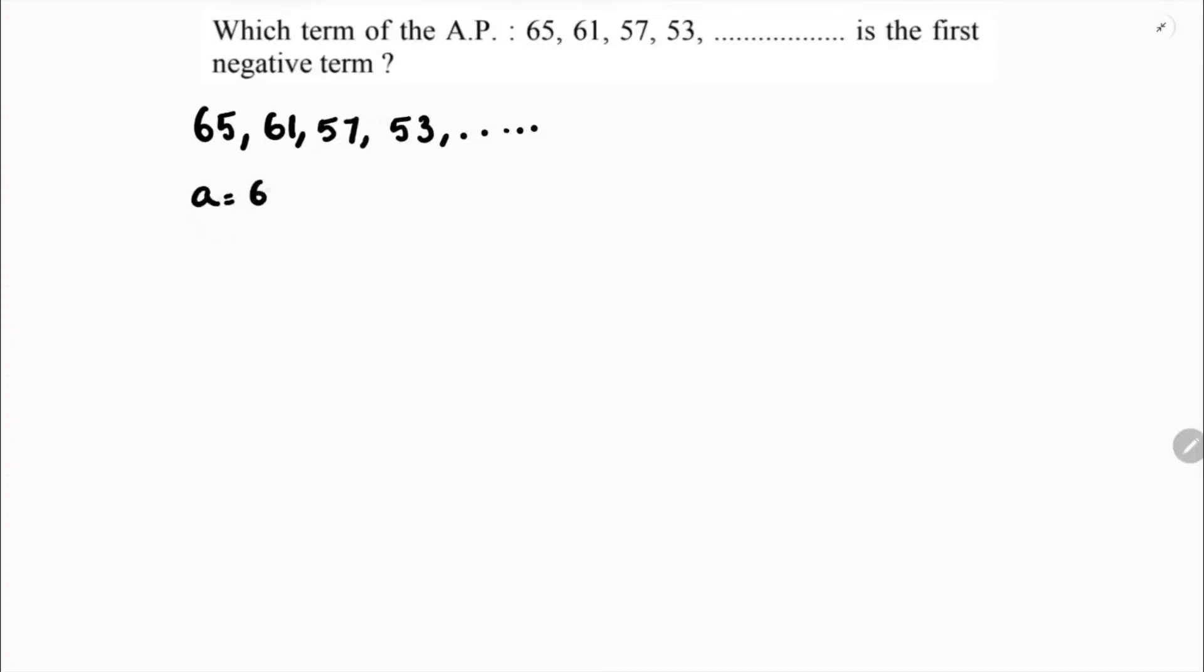So here the first term is 65. Common difference: a₂ minus a₁ equals 61 minus 65, which is minus 4. Common difference is minus 4.